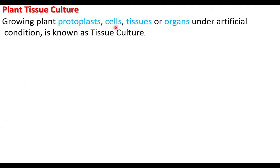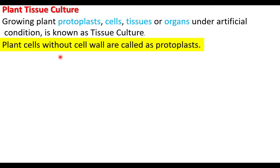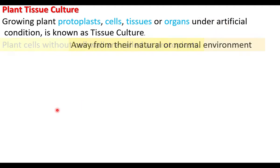Protoplasts, cells, tissues, and organs are grown. What are protoplasts? Plant cells without a cell wall are called protoplasts. If we remove the cell wall, the remaining part of the plant cell is the protoplast. Artificial condition means away from the natural or normal environment — that is, lab condition.